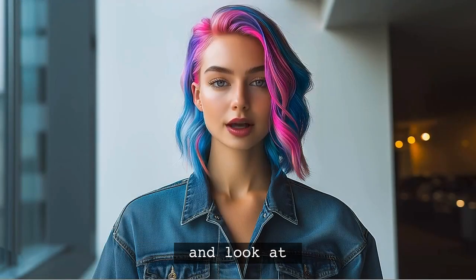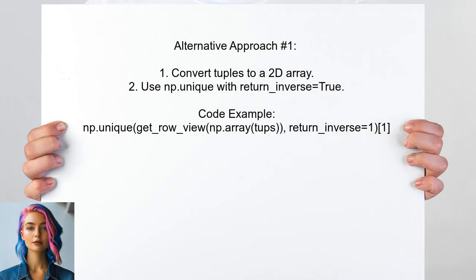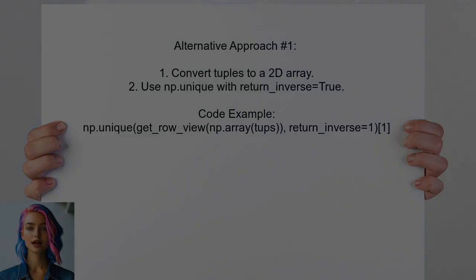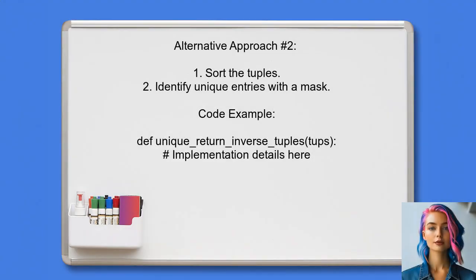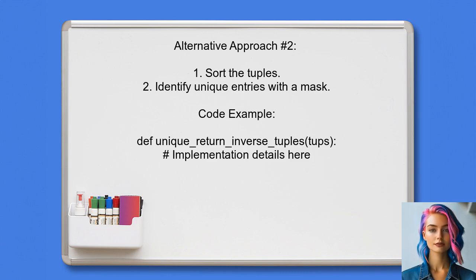Let's move forward and look at another answer. An alternative approach to factorizing a list of tuples involves converting each tuple into a row of a two-dimensional array. Then, by using NumPy's unique function with the return inverse option, you can efficiently factorize the tuples. Another method suggested is to sort the tuples and identify unique entries. This involves creating an index for sorting and then using a mask to find unique tuples, which can also return the inverse indices.